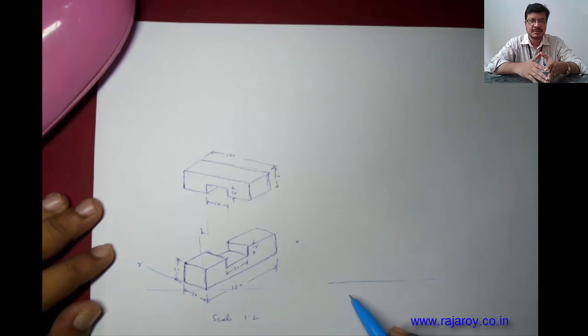Start the drawing with a horizontal line. Mark some point here. Using protractor, draw a 30 degree line and draw another 30 degree line on both sides. Assume this as x-axis and this is y-axis. Draw a vertical, call this as z-axis.